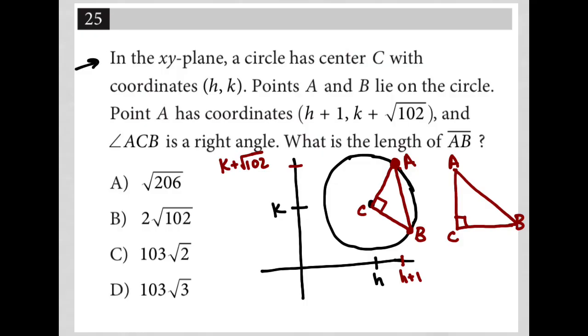Do I know the length of C to A? Not exactly either. Is there a way to figure that out, though? So I do know that from K up to K plus root 102, that's a distance of root 102. And I do know that from there across to this point A, that's the distance between H and H plus 1, so that would just be 1. So I do know that I can figure out, this is kind of weird, but I can treat that like my hypotenuse of the green right triangle and figure out that length.